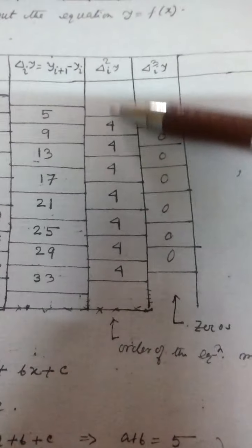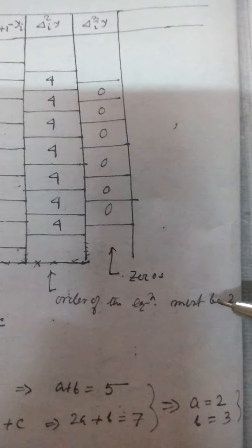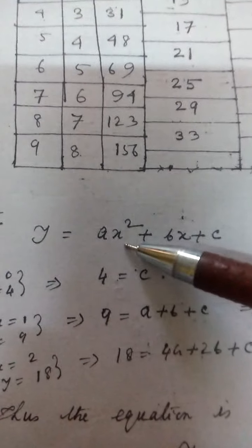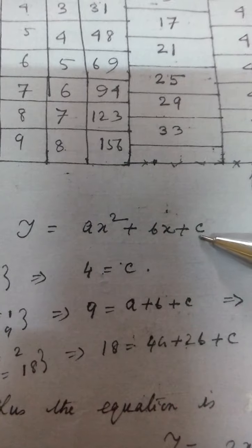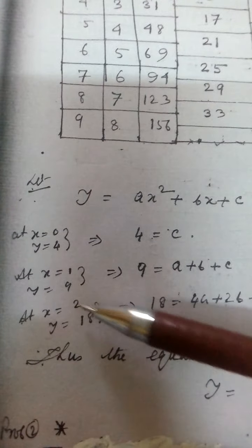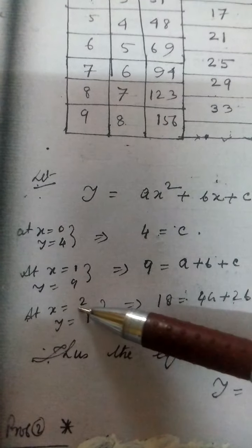This constant second difference decides that the order of the equation must be 2. So the second-order equation is y = ax² + bx + c. We have 3 unknowns: a, b, c, so we need 3 conditions. When x=0, y=4, giving us c=4. When x=1, y=9, we get another equation.